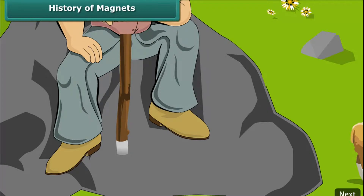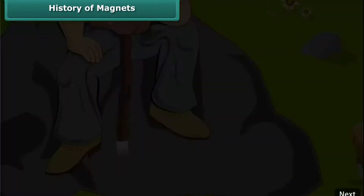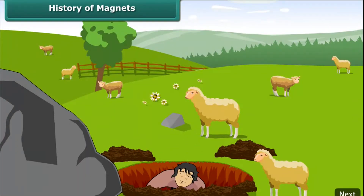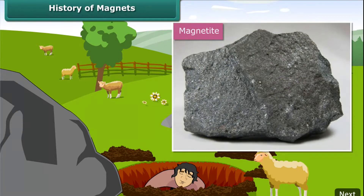To find the source of attraction, he dug up the earth to find magnetite — a natural magnetic material. This type of rock was subsequently named magnetite, which was named after Magnus himself.